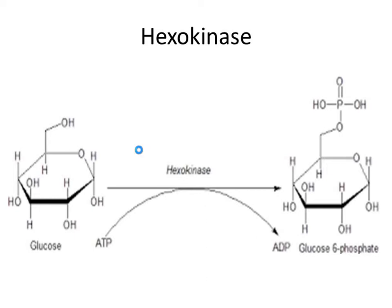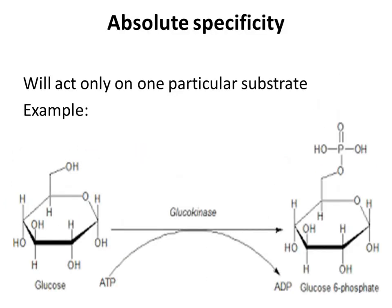The another type of specificity is absolute specificity. Such enzymes will act only on one particular substrate. For example, glucokinase catalyzes the transfer of phosphate from ATP to glucose and to no other sugar. Here, only glucose is converted into glucose-6-phosphate in the presence of glucokinase. Glucokinase cannot convert other hexose sugars to their respective 6-phosphates.